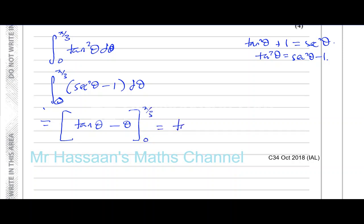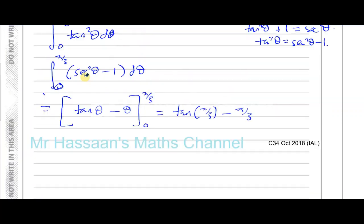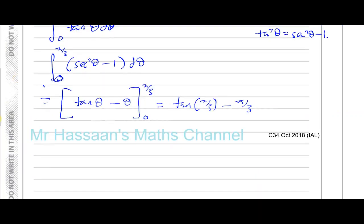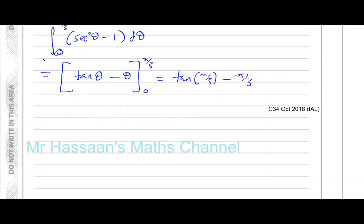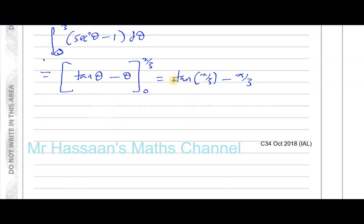Substituting the limits, we get tan of pi over 3 minus pi over 3. Tan of 0 is 0 so we don't need to worry about the lower limit in this case — though be careful, if you had cosine in there, cosine of 0 is 1 so you would need it. Now, tan of pi over 3 is the tan of 60 degrees — using the standard triangle values, tan of 60 is root 3. So the result is root 3 minus pi over 3.